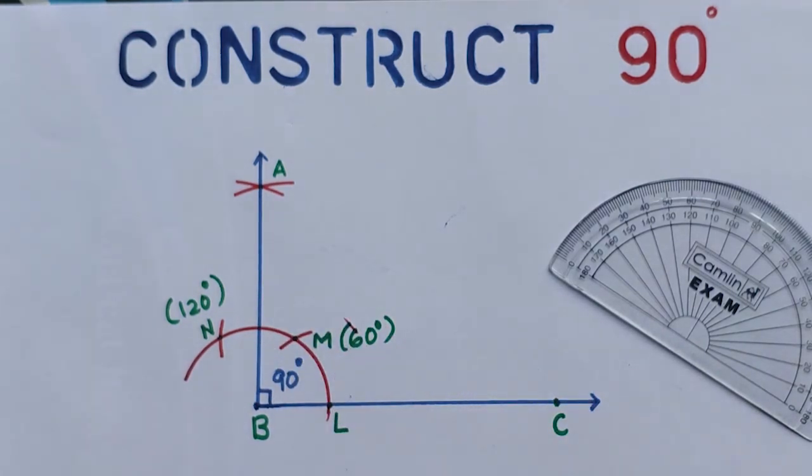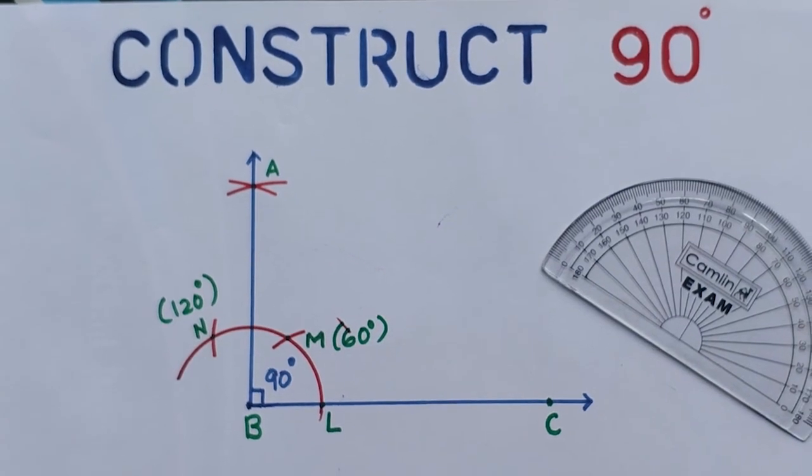Then bisect the second part, that means the second 60 part we have to bisect, then we will get 90 degrees because 60 plus 30 is 90 degrees. Hope you understand the concept, thank you.